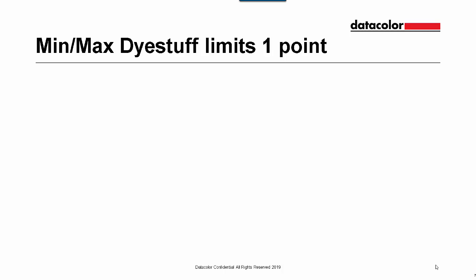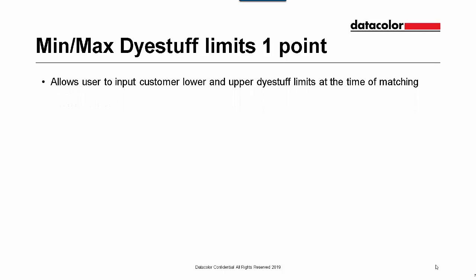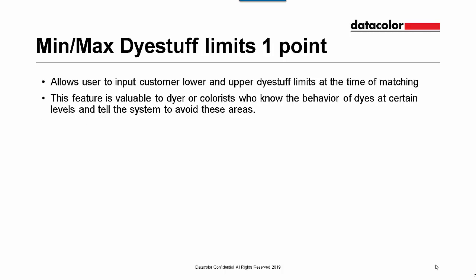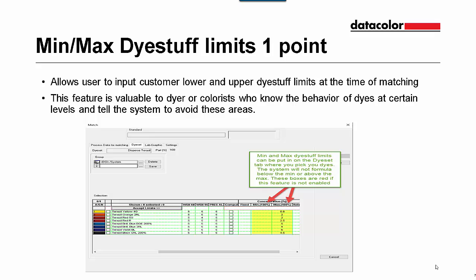The next feature is max/min dye stuff limits, which is worth one feature point. This allows the user to input upper and lower limits of dye stuff at the time of matching. This feature is valuable to dyers and colorists who know the behavior of the dyes and know that it can't be outside of certain ranges. So in the matching screen we can put in our different maxes and mins. The system will not calculate above or below the max and min on this table. If these boxes are in red, they are not enabled.